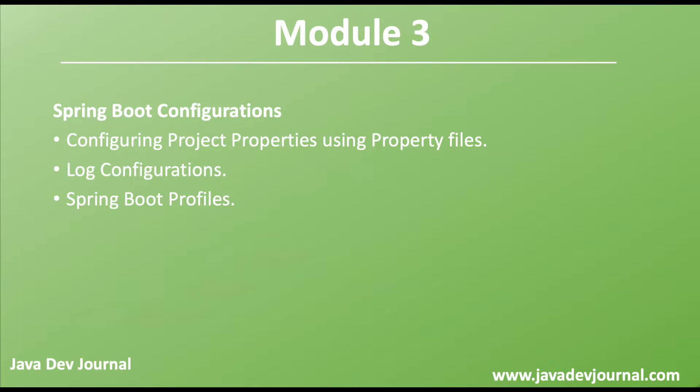Module 3 will be talking more about configurations like the property file — the main configuration file in Spring Boot — where you can control the behavior of your application. We'll take a deeper look into the property file and the different ways you can configure it. Logging is a critical part of any production-grade application, so we will learn the different ways to configure logging, control logging APIs provided by Spring Boot, and how to use log4j or other logging libraries.